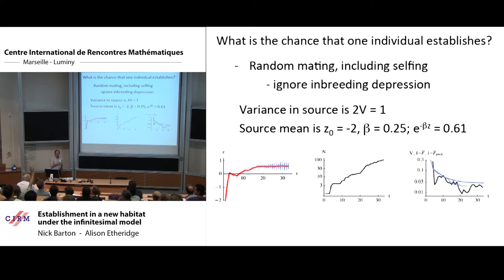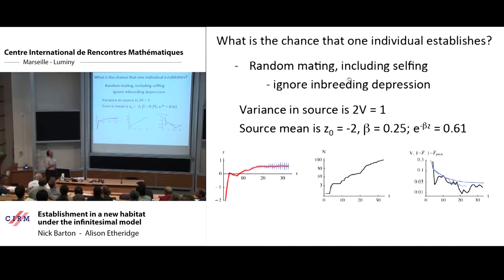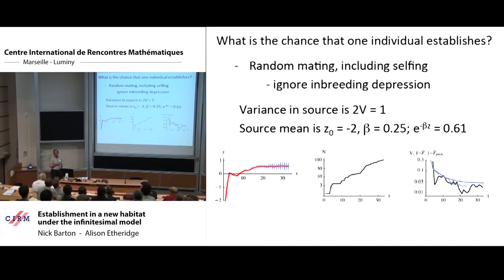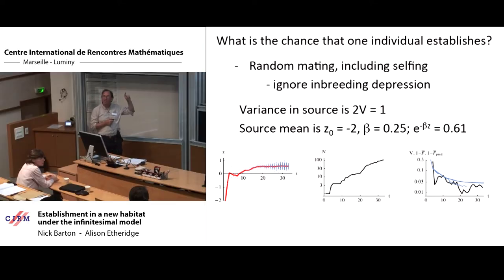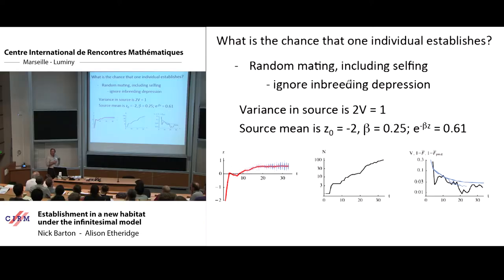Here beta is 0.25. To put that in context, if we take the average fitness of an individual from the source population measured in the new habitat, it's 0.61 — meaning the population will decline by a factor of 0.61 every generation. Smaller beta means less effective selection; as beta goes to 0, it's neutral. We throw in a single individual and look at what happens.